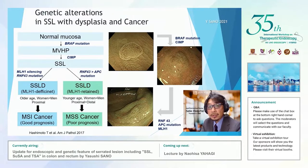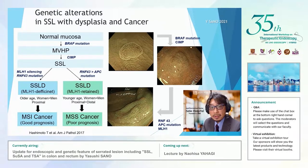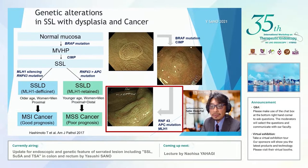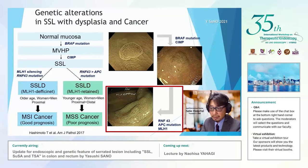This slide shows the genetic alteration in the sessile serrated region with dysplasia and cancer. Recently, somatic RNF43 mutations were found in about 18% of dysplastic colorectal cancer, strongly associated with microsatellite instability and APC mutations. It is believed that dysplasia is caused by mutation in the RNF43 gene in the sessile serrated region.